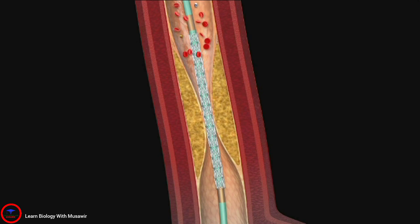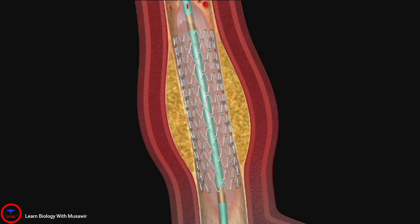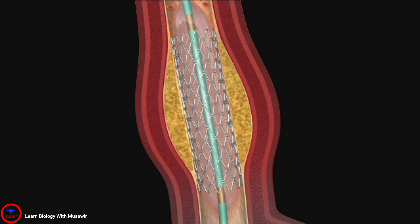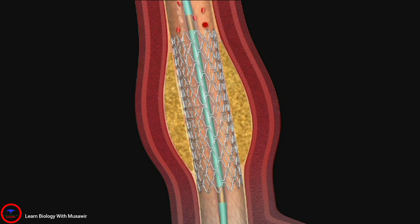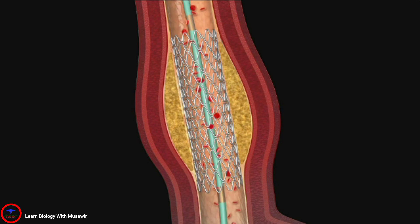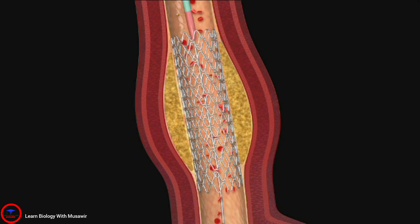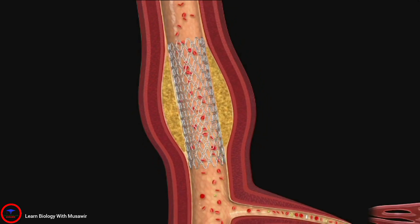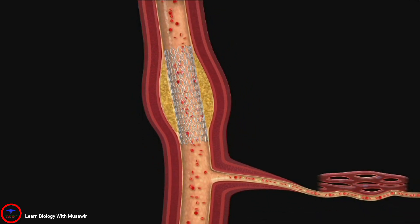When the stent reaches the narrowed area, the balloon is inflated, expanding the stent and flattening the plaque deposits against your artery walls. The stent locks into place and acts like a scaffold, holding the artery open. Then the catheter and deflated balloon are removed, leaving the stent in place.